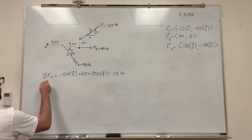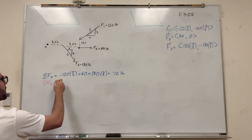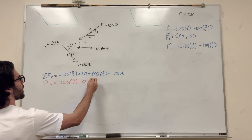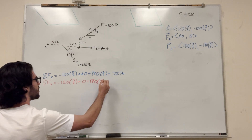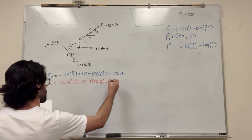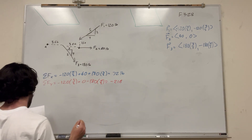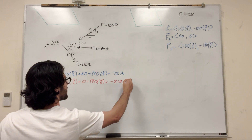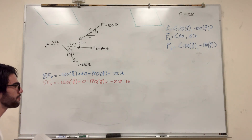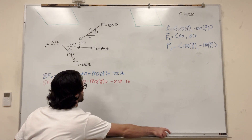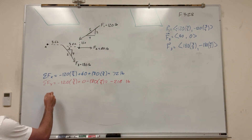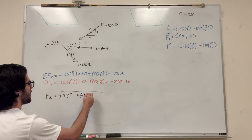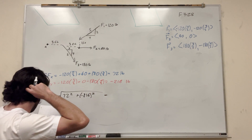Now the sum of the forces in the y direction. That's going to be negative 120 times 3/5, plus 0, minus 180 times 4/5. This gives you negative 216 pounds. To find the resultant force, we take the magnitude of x and y: the square root of 72 squared plus negative 216 squared. That gives us 228 pounds.